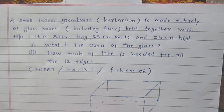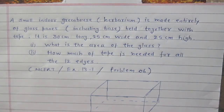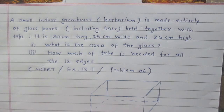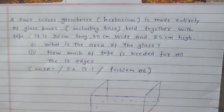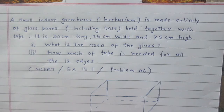A small indoor greenhouse called a herbarium is made entirely of glass panes including the base, held together with tape. It is 30 centimeters long, 25 centimeters wide, and 25 centimeters high. Question one: what is the area of the glass? Question two: how much tape is needed for all 12 edges?